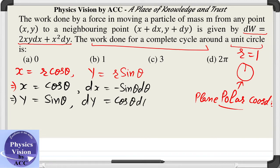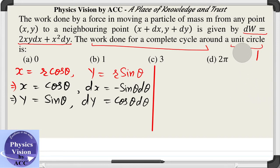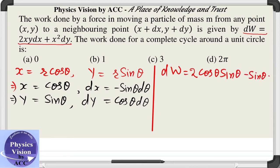Now we will substitute these values in the given function dW and we will solve for the complete work done. We have dW which is given by 2xy dx, which is -sin θ dθ, plus x², which is cos² θ, and dy, which is cos θ dθ.